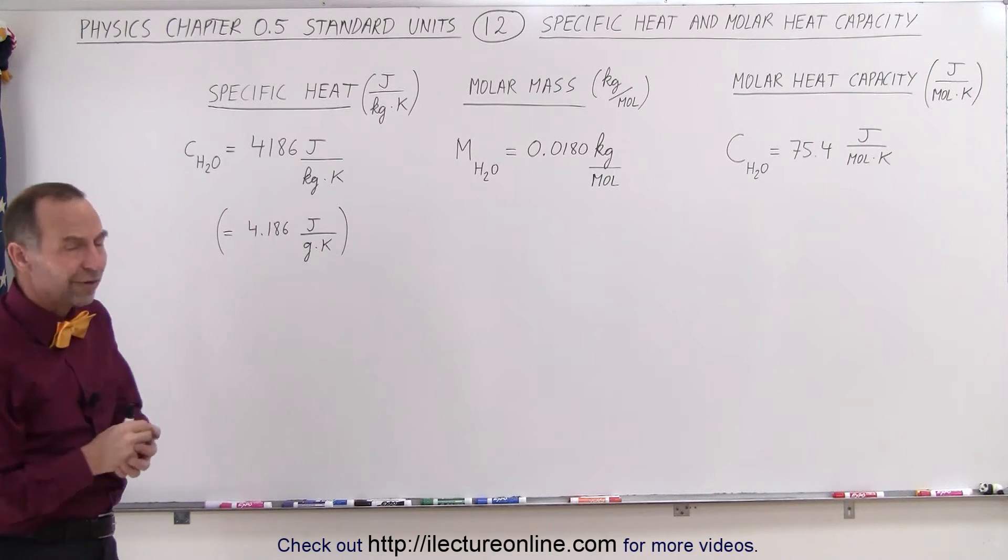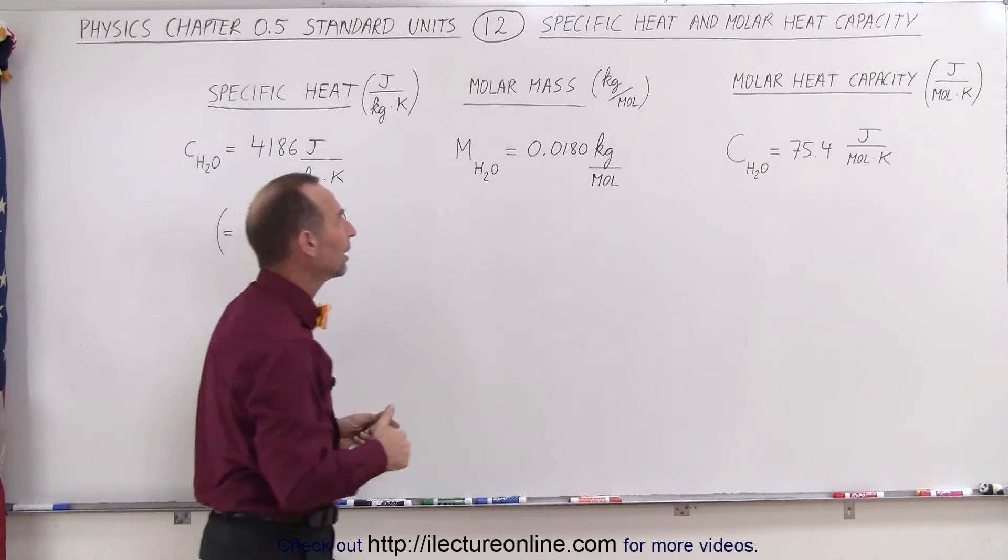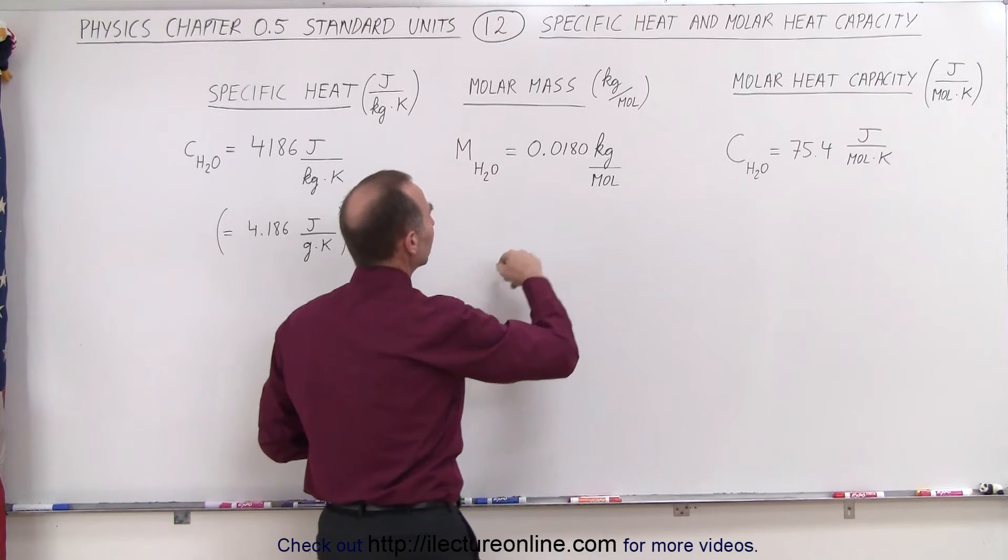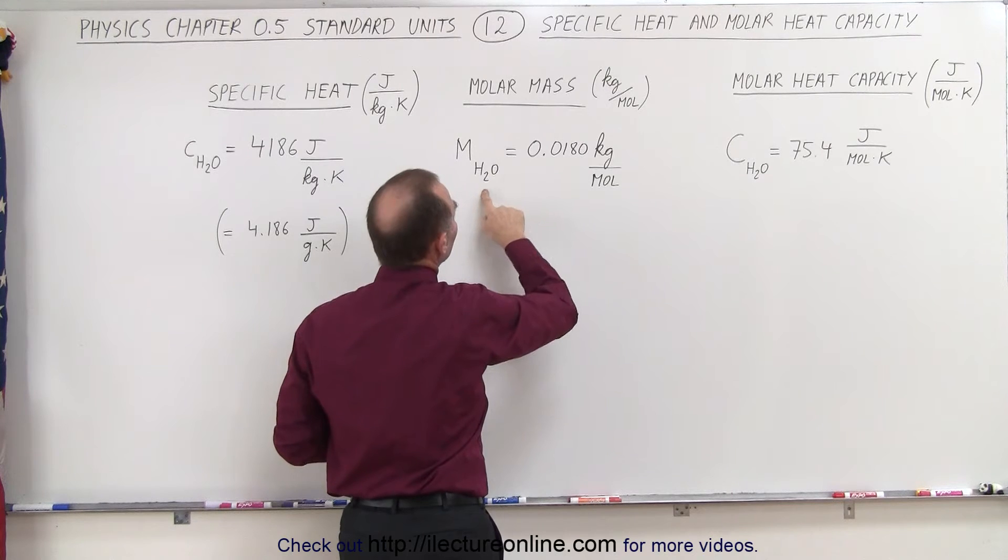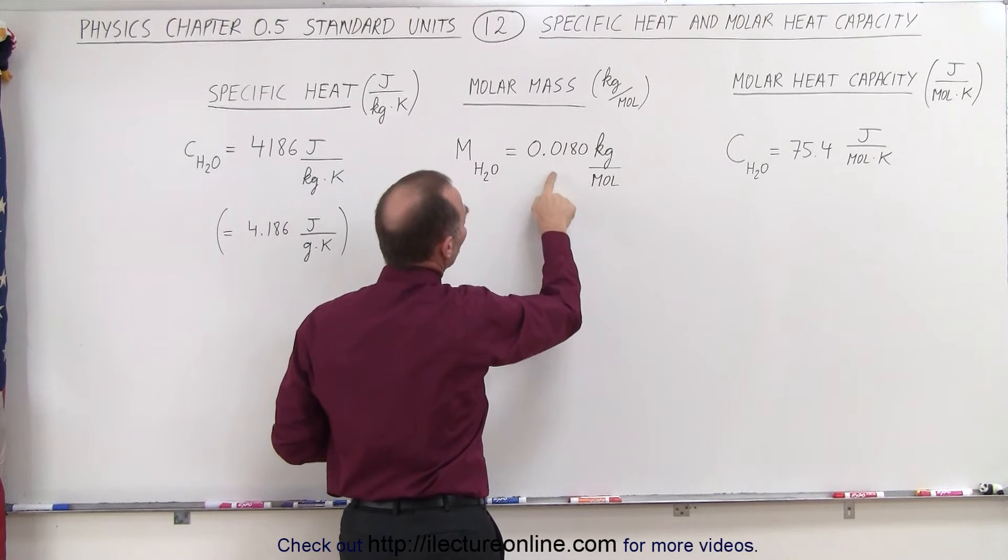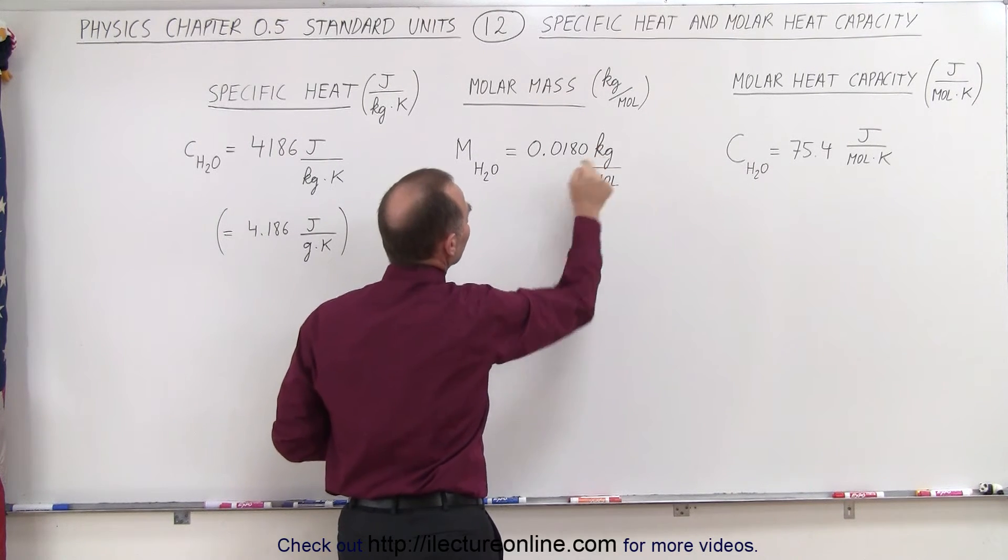Now when we define molar mass, that is the mass of a mole, in kilograms per mole. So the molar mass of water is equal to 18 grams per mole, or 0.018 kilograms per mole.